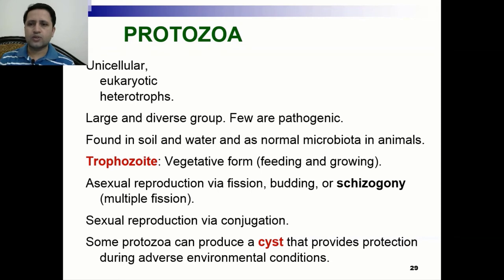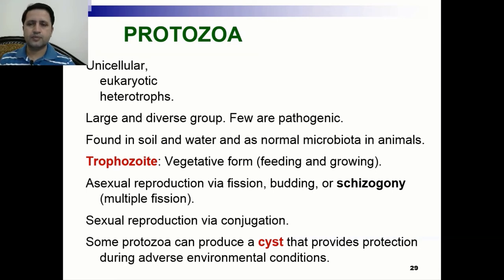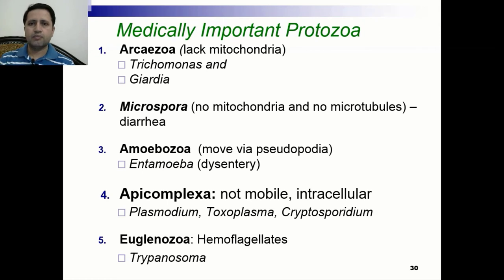Another type of eukaryotic microorganism is protozoa. These protozoans are unicellular, eukaryotic, and heterotrophs — they cannot produce their own food. They are a large and diverse group, with fewer pathogenic microorganisms that cause diseases. They are found in soil, water, and as normal microbiota in animals. A trophozoite is the vegetative form which helps in feeding, growing, and reproduction. Asexual reproduction includes fission, budding, or schizogony, which is multiple fission. There is also sexual reproduction by conjugation. Some protozoa can produce a cyst that provides protection during adverse environmental conditions.